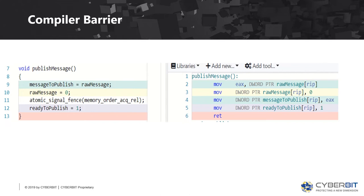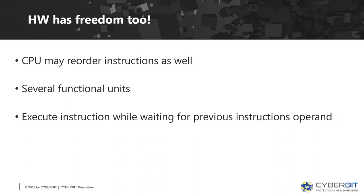But there's something even harder: the hardware also has freedom. The CPU can rearrange instructions, use several functional units simultaneously, and execute instructions out of order based on data availability. That's why volatile is not really the answer — volatile is a compiler instruction and the CPU does not know about it. Even with volatile, the CPU could still reorder the operations.